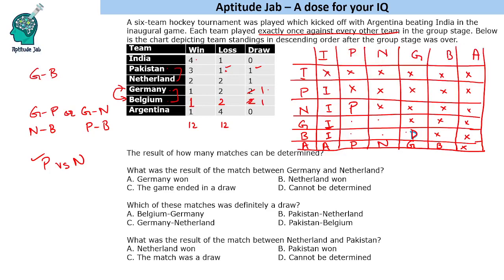For the remaining four matches, either Germany-Pakistan is a draw and Netherland-Belgium is a draw, or the other combination. We can determine the winners of Pakistan and Netherland's other matches in each case, but we cannot determine which of these two draw-pair scenarios occurred. So out of these four matches, there are two win-loss matches and two draw matches whose specific assignments we cannot determine. We can find the result of 11 out of 15 matches.